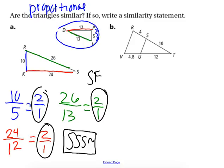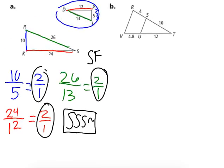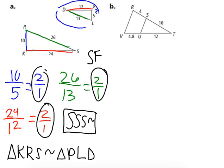And then help us, if they are, write a similarity statement. So that's just kind of writing like a congruence statement. Triangle KRS is similar to what triangle, remember order matters. P, I think that is a, let me see what it says, L, D.